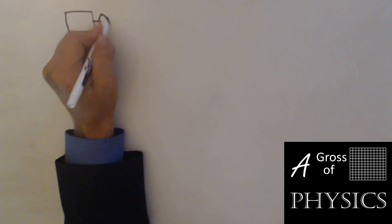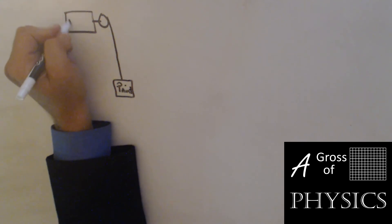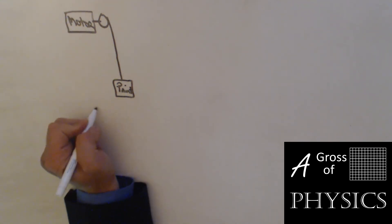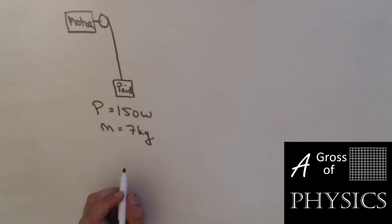In this next one, we're going to have a motor that's going to be lifting a paint can. The paint is there and the motor is here. We have a power output of 150 watts and the paint can has a mass of seven kilograms. That's all we're given.